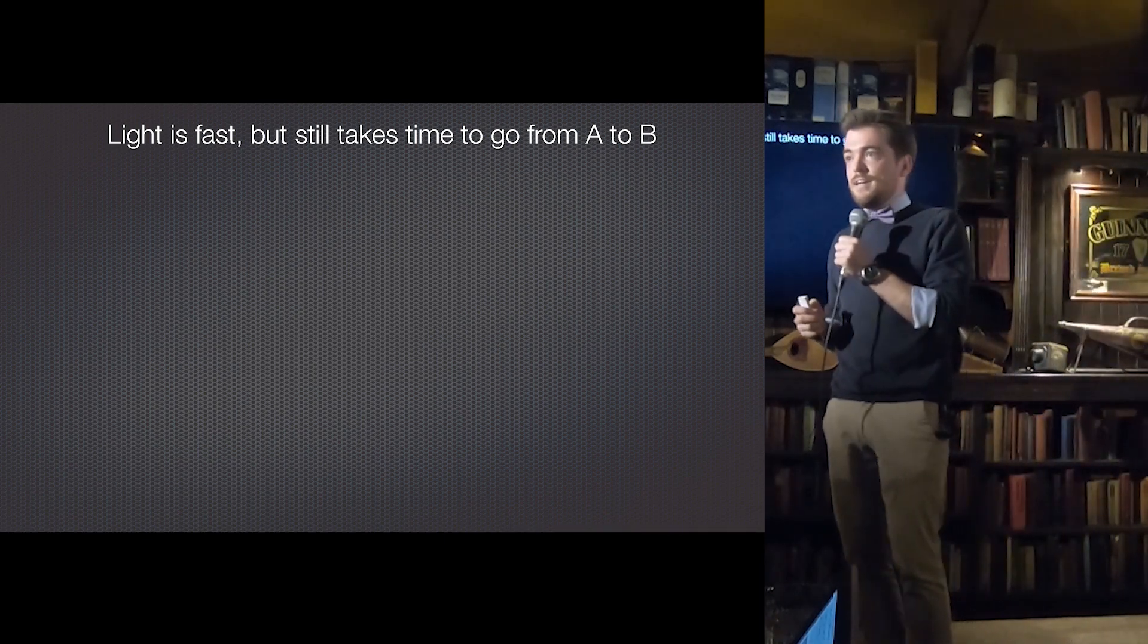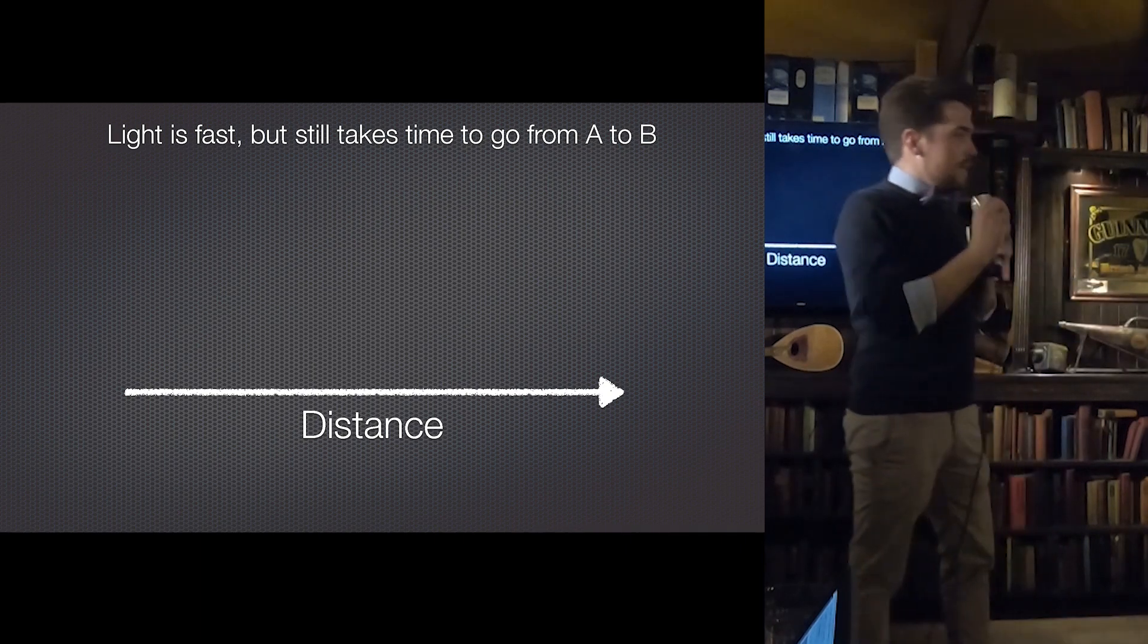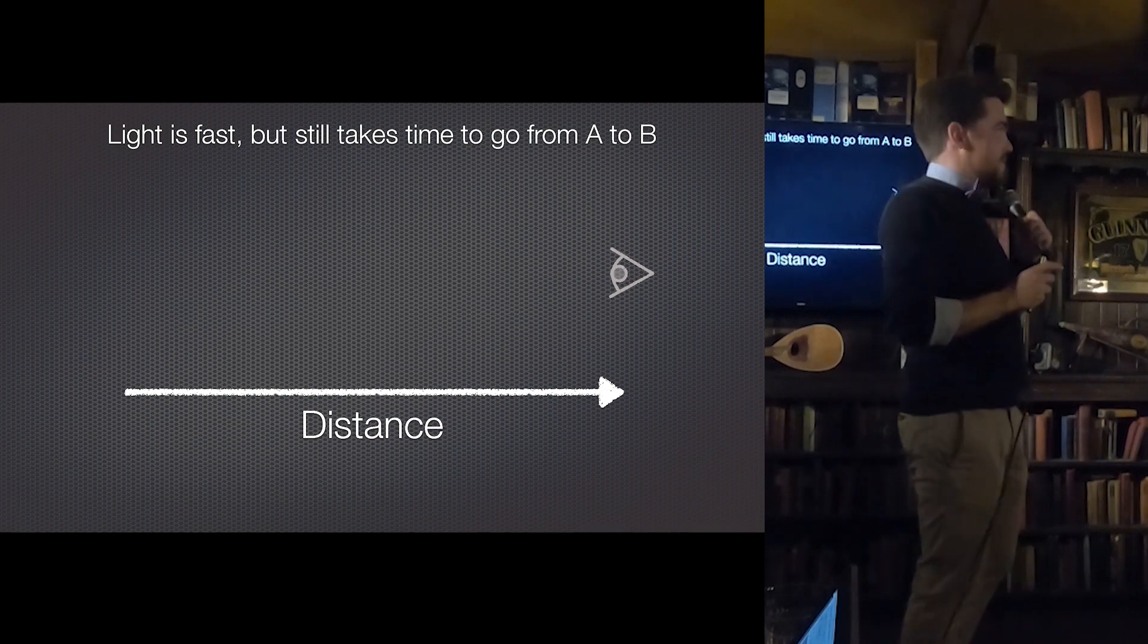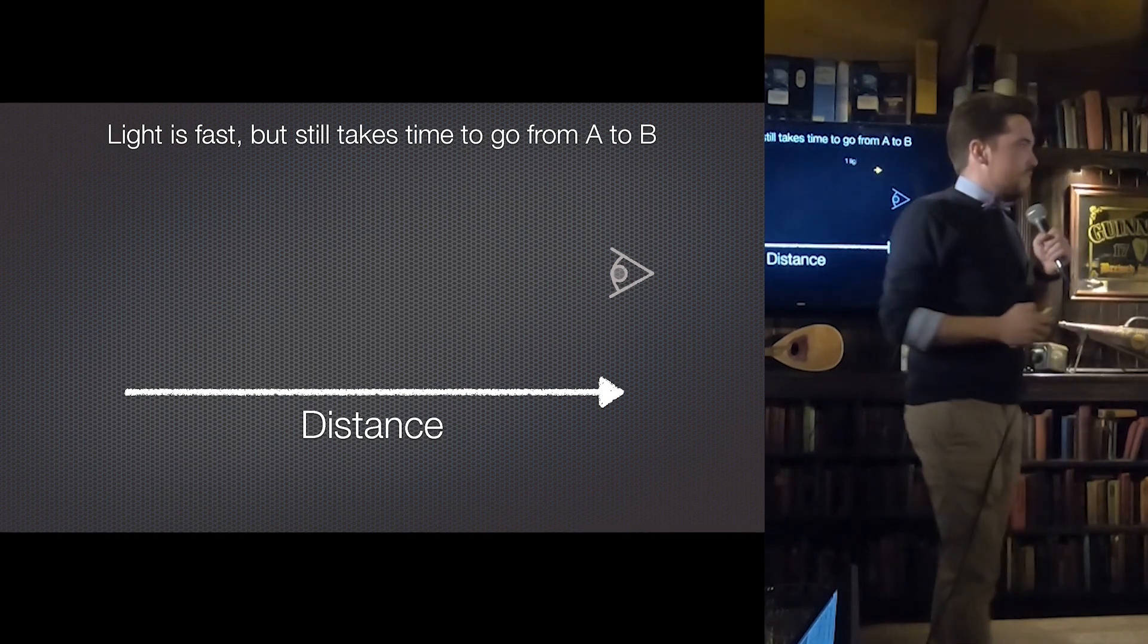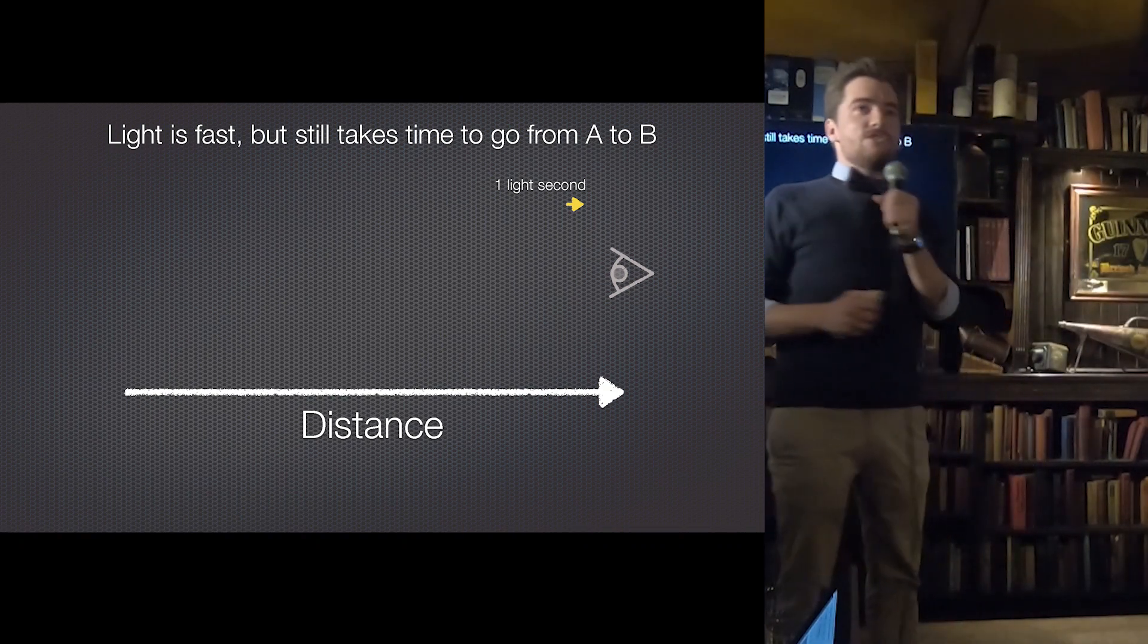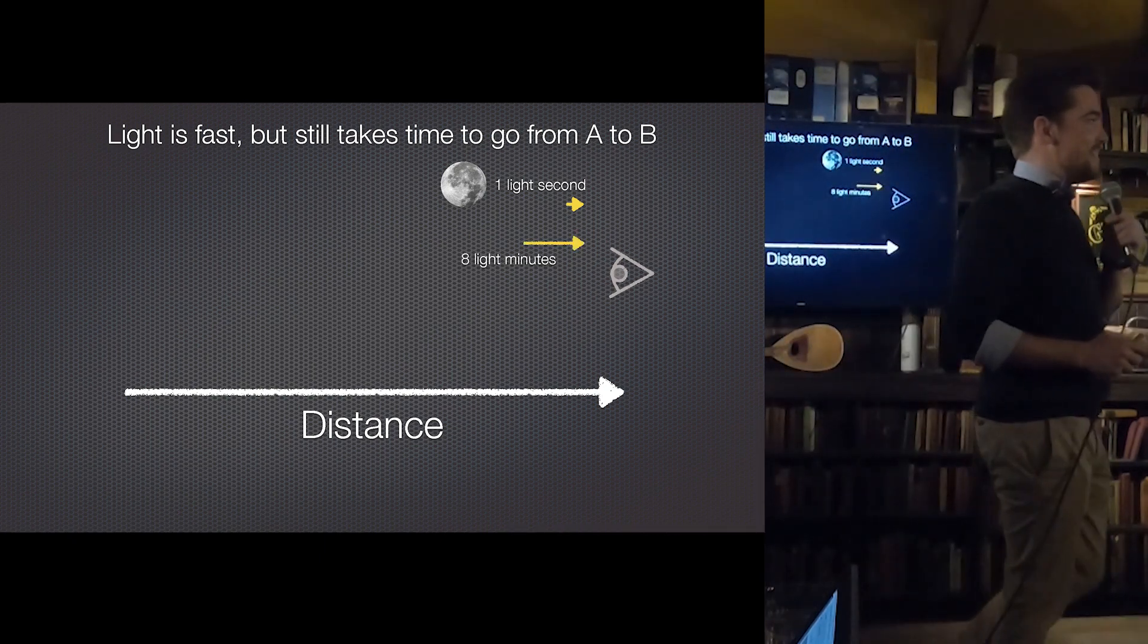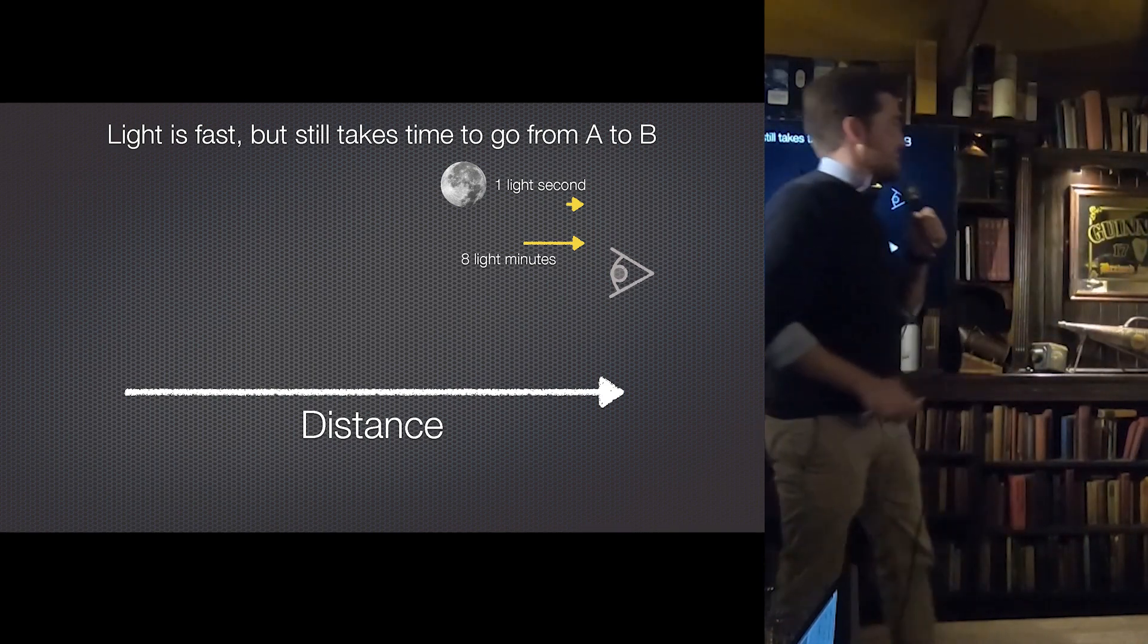And because it travels at a finite speed, it takes time to go from point A to point B. And what that means is that we can use the time that it takes light to travel as a measure of distance. As a little bit of a test, if this is us here at the end of this distance axis, and I tell you that something sits one light second away, what is that thing? The moon! Excellent! The moon is roughly one light second away. Let's try for round two. What is eight light minutes away? The sun! Exactly! Fantastic! Two from two.